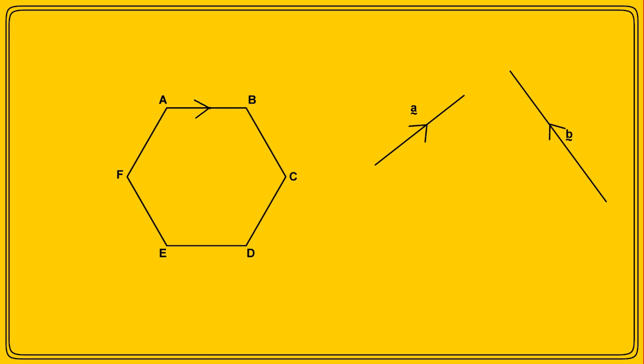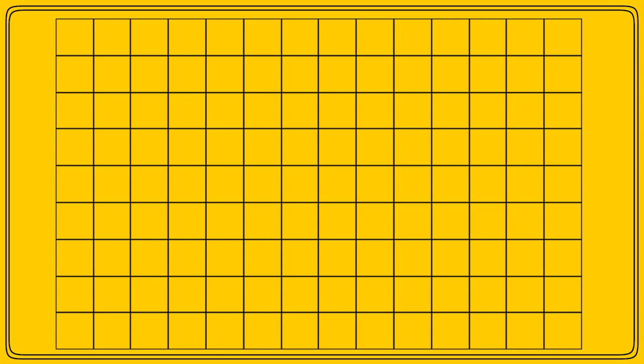Up until now, we've not needed a grid for any of our vector work, but we'll definitely need one for column vectors, although at this stage it doesn't necessarily have to have a set of axes. Using the column vector notation, vectors are denoted by two numbers written one above the other. The top number is the component of the vector in the X, that is the horizontal direction, and the bottom number is the component in the Y, the vertical direction. Please make sure you don't get column vectors mixed up with coordinates, and don't draw a line under the top number so that it looks like a fraction.